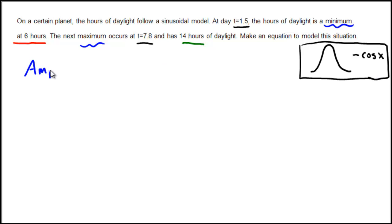The amplitude will be equal to the maximum, which is 14 hours, minus the minimum, which is 6, and then divide by 2 because that gives us the amount it goes up and down from the midline. So 14 minus 6 is 8, divided by 2 gives us 4.